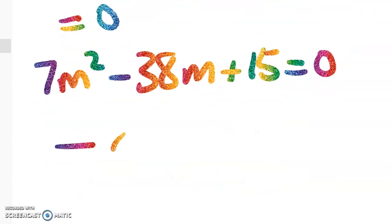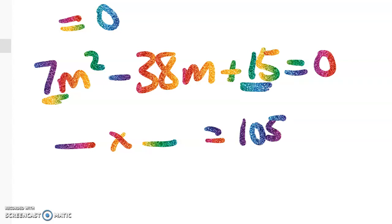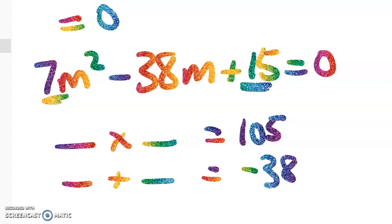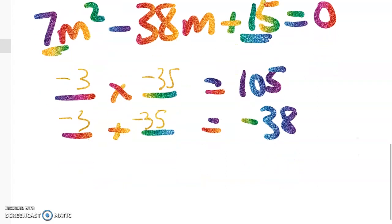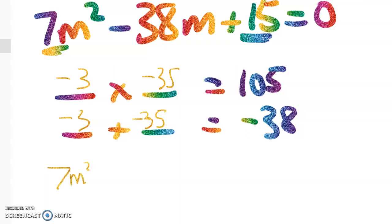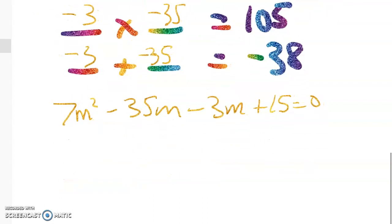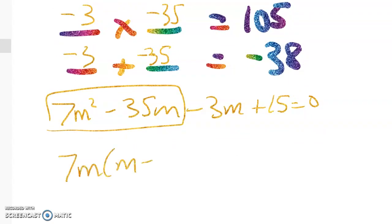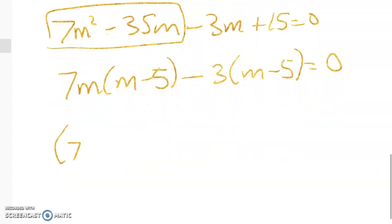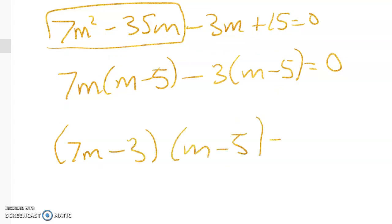Let's see if we can factorise. Something times something equals 7 times 15, which is 105, and something plus something gives me negative 38. That gives us negative 3 and negative 35. So: 7m squared minus 35m minus 3m plus 15 equals 0. Factorising using our two-step method, we get 7m into m minus 5, minus 3 into m minus 5, giving us 7m minus 3 times m minus 5 equals 0.